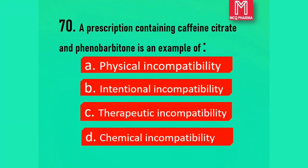Question number 70. A prescription containing caffeine citrate and phenobarbitone is an example of: Option A, Physical incompatibility. Option B, Intentional incompatibility. Option C, Therapeutic incompatibility. Option D, Chemical incompatibility. Correct answer: Option C, Therapeutic incompatibility.